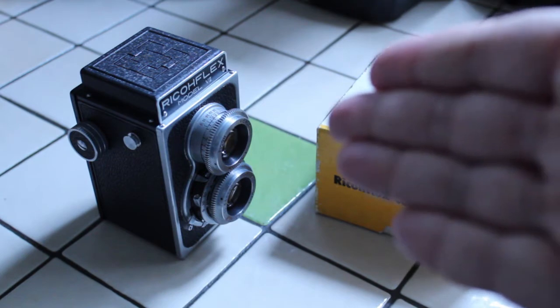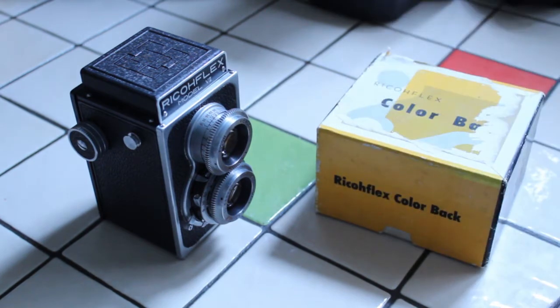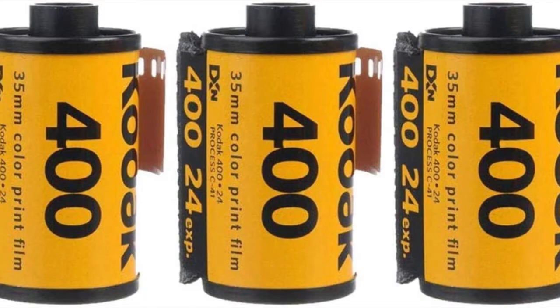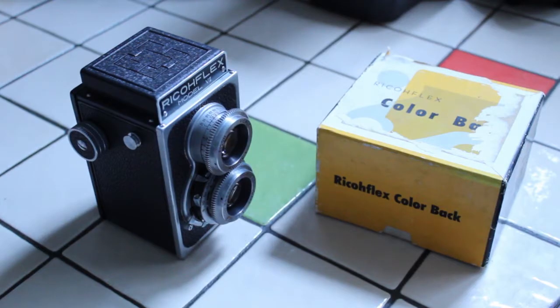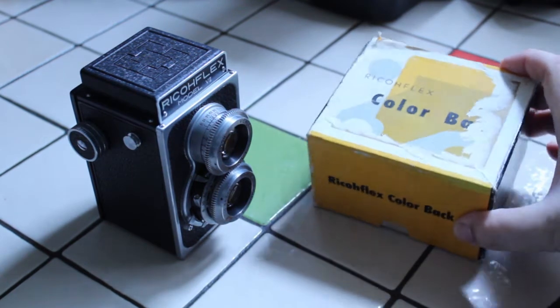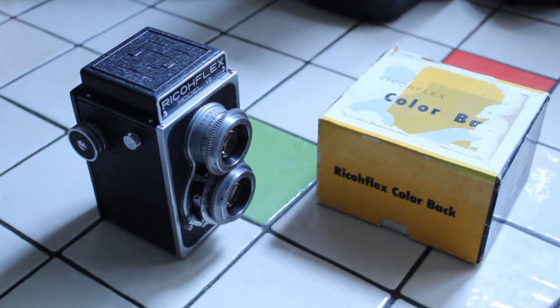This Ricoflex Model 7 takes those 120 size spools of film. Now, along the way, Ricoflex became quite aware of the fact that 35 millimeter was becoming very, very popular, especially in the latter part of the 50s and into the 60s. So they realized that maybe people would want to use 35 millimeter cartridges in their Ricoflex cameras. So they came up with this accessory which would allow them to adapt to the 35 millimeter film size, and I'll show you what I mean.